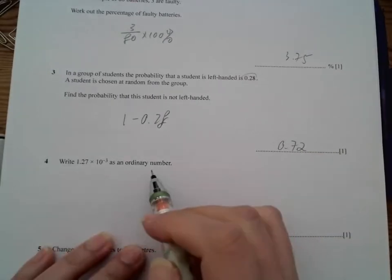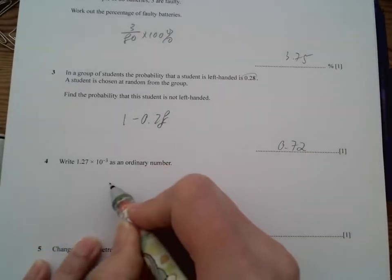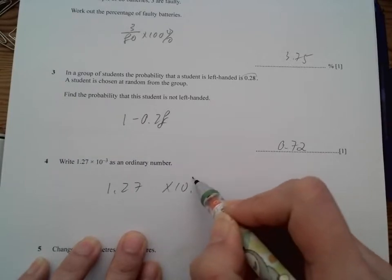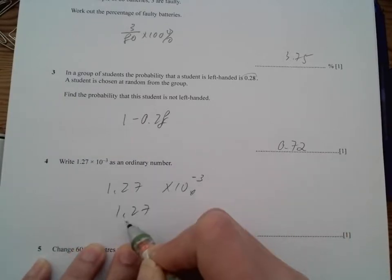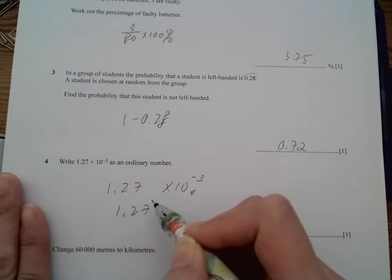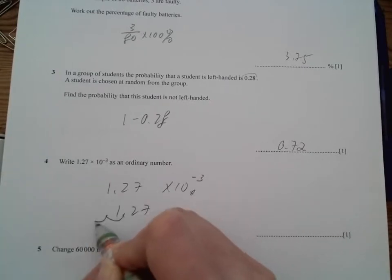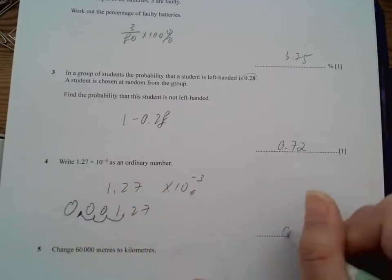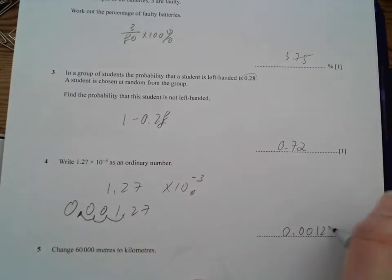And then we write this in the ordinary number. So we have 1.27 and then times 10 to the negative 3, which means that 1.27, we move the decimal to the left 3 points. So 1, 2, 3, and this should be the decimal place. And we fill that in with 0. So it's 0.00127.